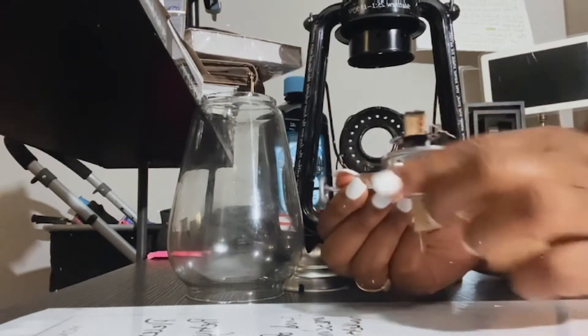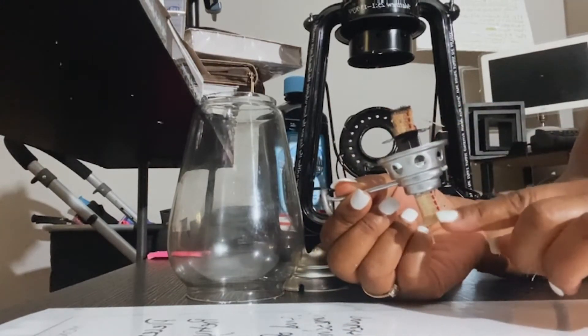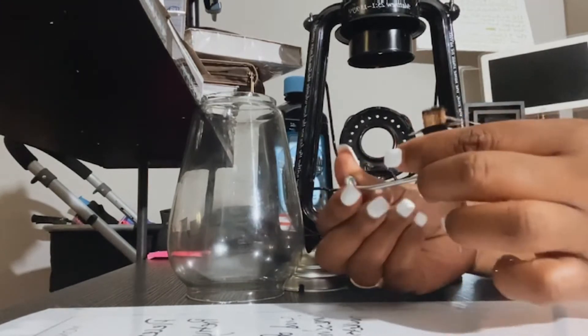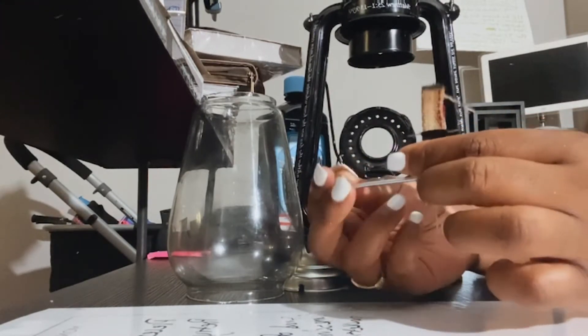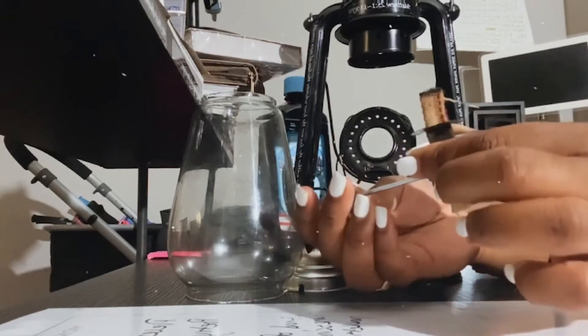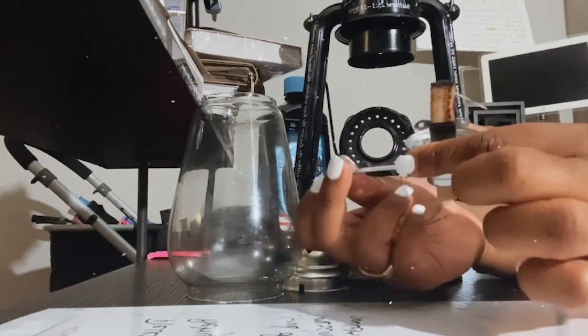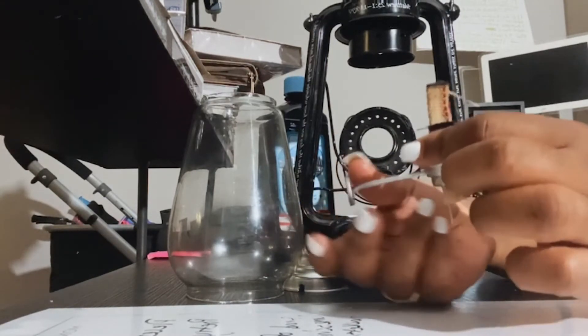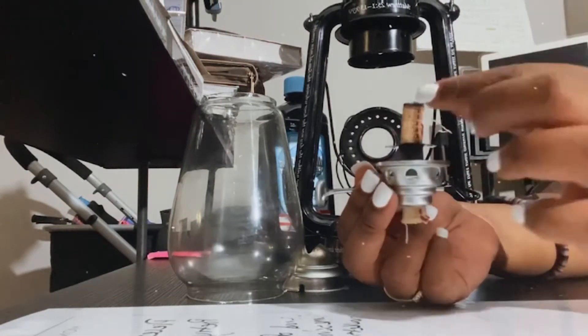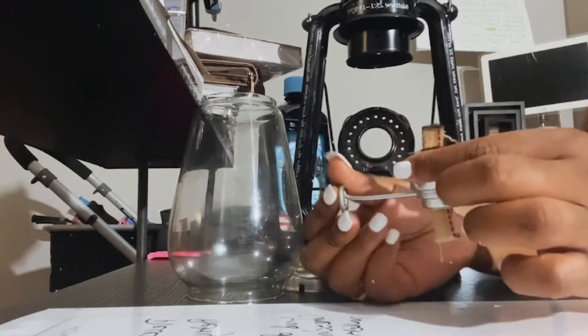You should have a longer wick than this. I've been burning this one a lot so it got shorter. But that is how you replace the wick. You'll take it out, get a new wick, put it in there like I just did, and turn this.